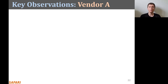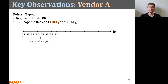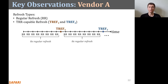Let's look at the key observations regarding each vendor's TRR implementation, starting with vendor A. Vendor A performs three types of refresh operations: a regular refresh that every DDR4 DRAM performs, plus two variations of TRR-capable refresh commands, which we refer to as TRF1 and TRF2. In the timeline, each tick represents a refresh command from the memory controller. During the first eight refresh commands, the DRAM chip performs a regular refresh. On the ninth refresh command, the TRR mechanism performs TRF1. The next eight are again regular refreshes, followed by TRF2. Overall, the TRR mechanism uses every ninth refresh command to perform TRF1 and TRF2 in an interleaved manner.